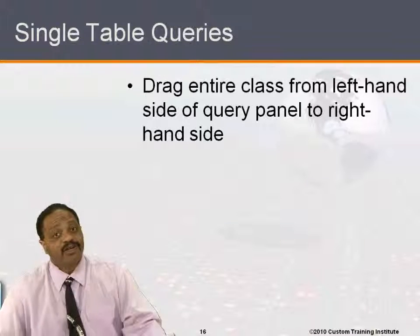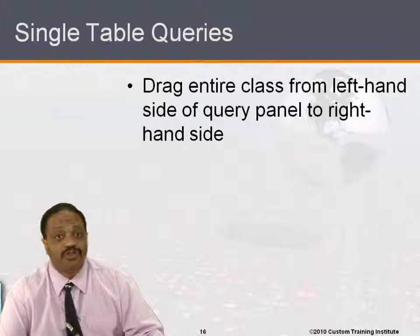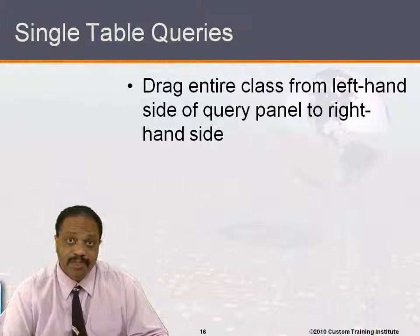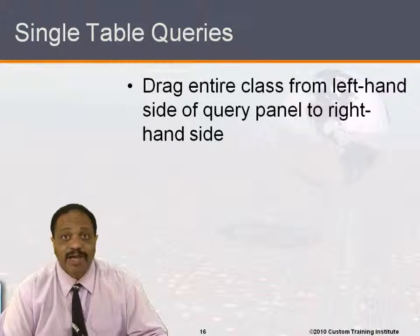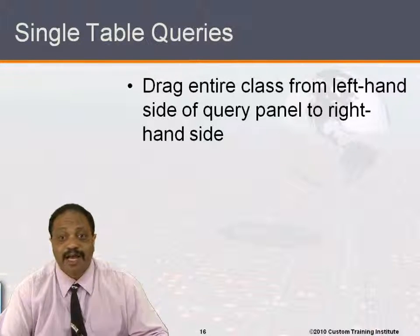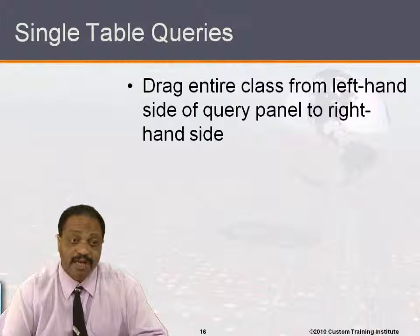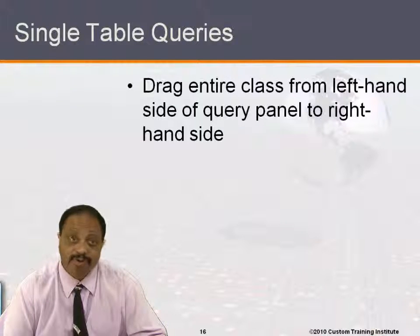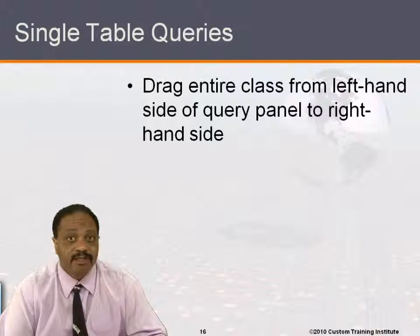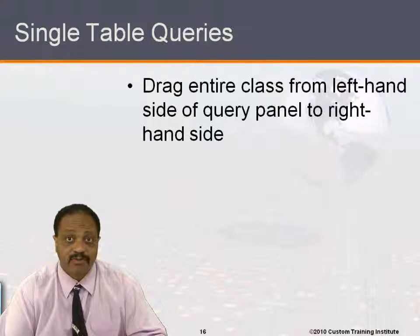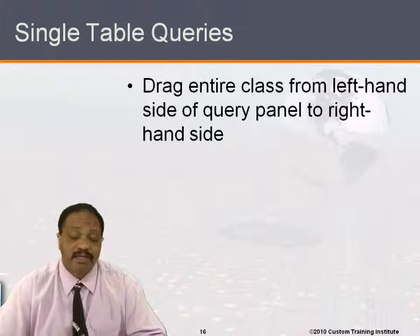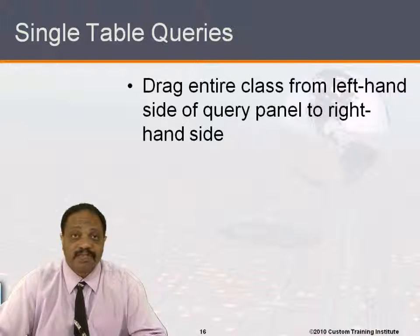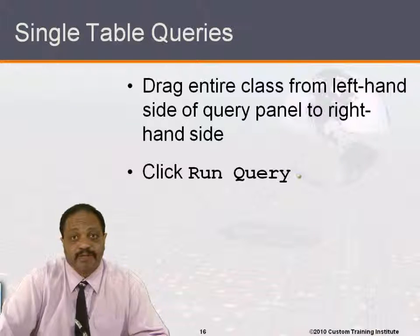It's also fairly simple to create single table queries. If you drag an entire class — and usually a class in Business Objects represents a full table — from the left-hand side of the query panel to the right-hand side, that generates a single table query.